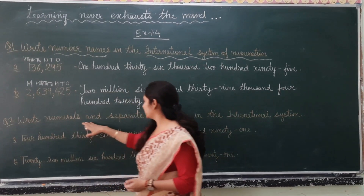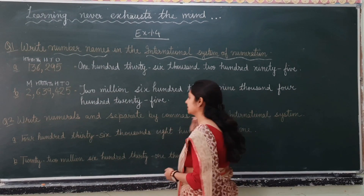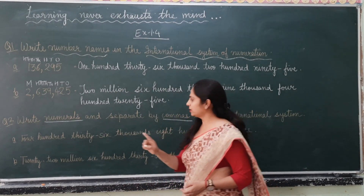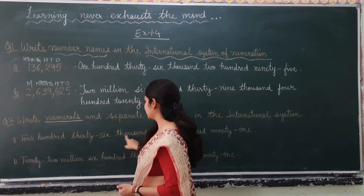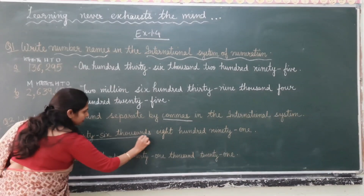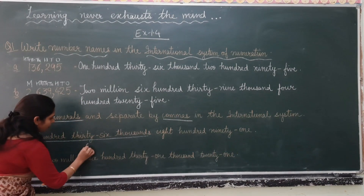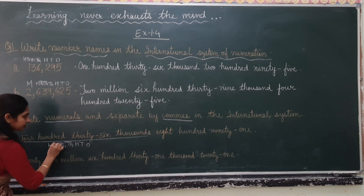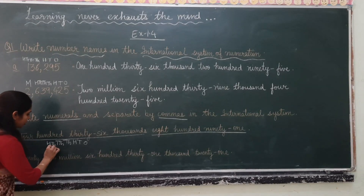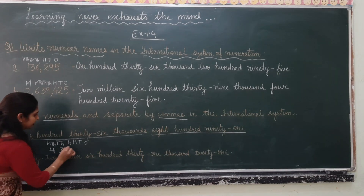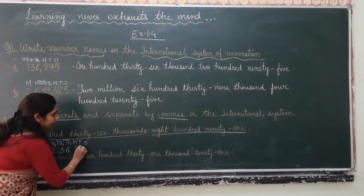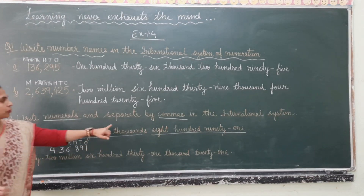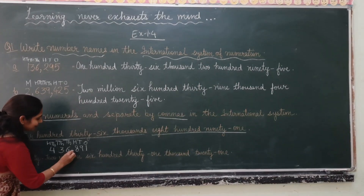Question 2: Write numerals and separate by commas in the international system. First we write the numeral, then place the commas. The number is four hundred thirty-six thousand, eight hundred ninety-one. We write the places — ones, tens, hundreds, thousands, ten thousands, hundred thousands — and write the numeral as 436,891, putting the comma in the correct position.